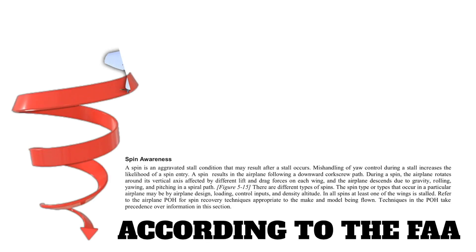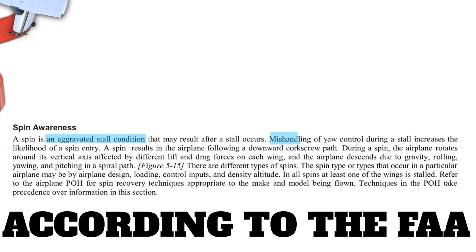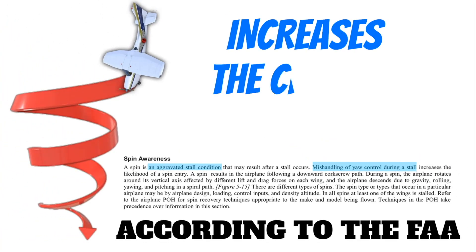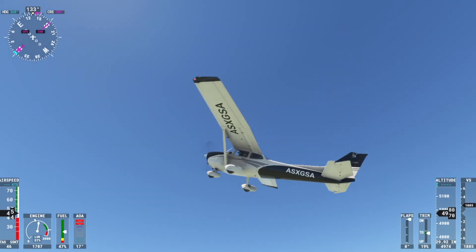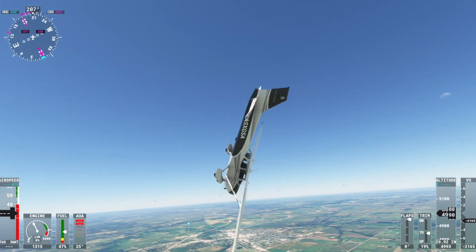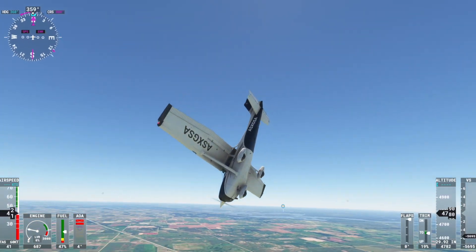According to the FAA, a spin is something that can happen to an airplane in an aggravated stall if you mishandle the yaw axis during that stall. Anytime these two things happen, this increases your chance of spinning the airplane, which means that the airplane barrels towards the ground while following a scary corkscrew path. Not a fun time, unless of course you're spinning the airplane on purpose.